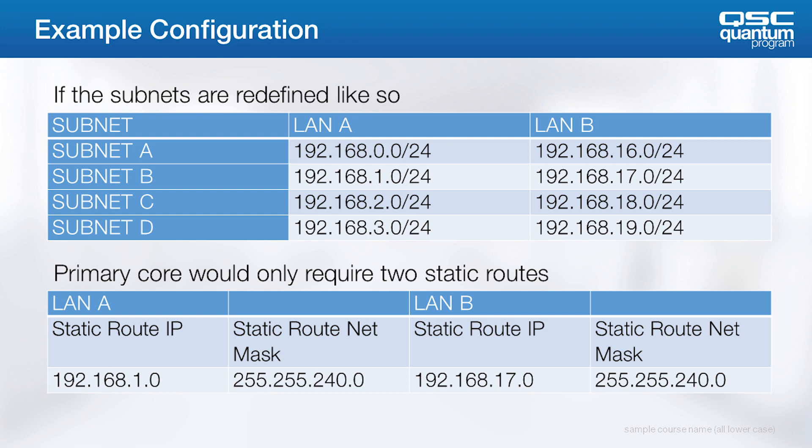If you didn't follow all of that, don't worry. The one thing to remember is: if you have a situation like this, don't interweave IP address schemes for LAN A and LAN B. Define all LAN A addresses by counting up, then come back to LAN B of the first device and go from there. Ideally, start the LAN B addresses on numbers that can easily be defined in a single static route.